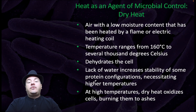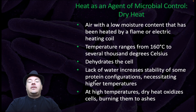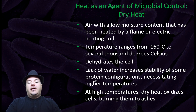We also have dry heat — air with low moisture content that has been heated by a flame or electric heating coil. Temperature ranges from 160 degrees Celsius to several thousand degrees Celsius. It dehydrates the cell. The lack of water increases the stability of some protein configurations, necessitating higher temperatures. At high temperatures, dry heat oxidizes the cells, burning them to ashes.